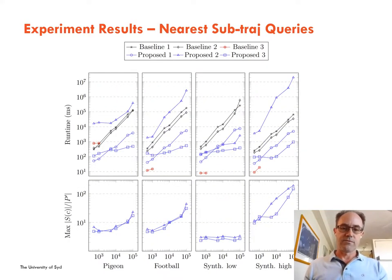The second set of results shows the nearest sub-trajectory query results. The sub-trajectory query run times for our best search algorithm, which is proposed 3 in this chart, overcomes baseline 1 algorithm issues I mentioned earlier, and scales as input P grows in size.